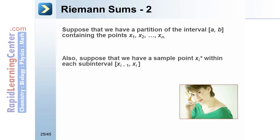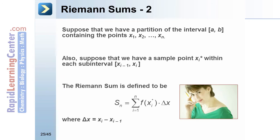Also, suppose that we have a sample point x sub i star within each subinterval [x sub i minus 1, x sub i]. The Riemann sum is defined to be S sub n, which equals the summation as i goes from 1 to n of f(x sub i star) times Δx, where Δx equals x sub i minus x sub i minus 1.